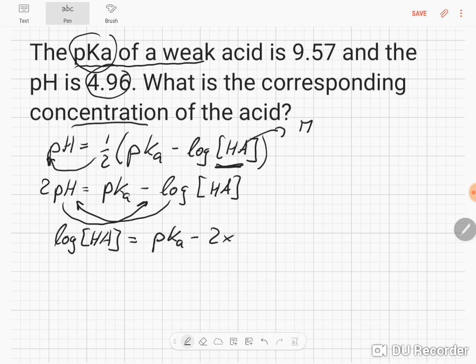And we need to put in the numbers. So we have here the pKa 9.57 minus 2 times 4.96. And we do that. This gives us negative 0.35.